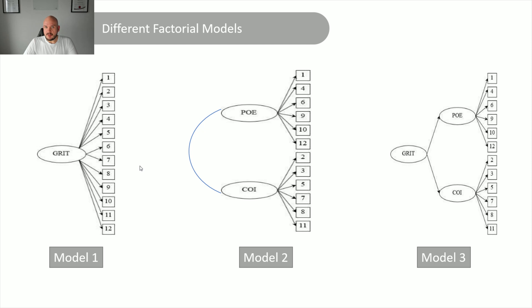So basically there are a couple of theoretical permutations that grit could manifest in, but I'd like to show you three, the most common. So if we look at the first model, this is what we call a first order factorial model. Why? Because the thing that we're making up, grit, it doesn't exist. But it is a function of all of the items working together gives us grit, right?